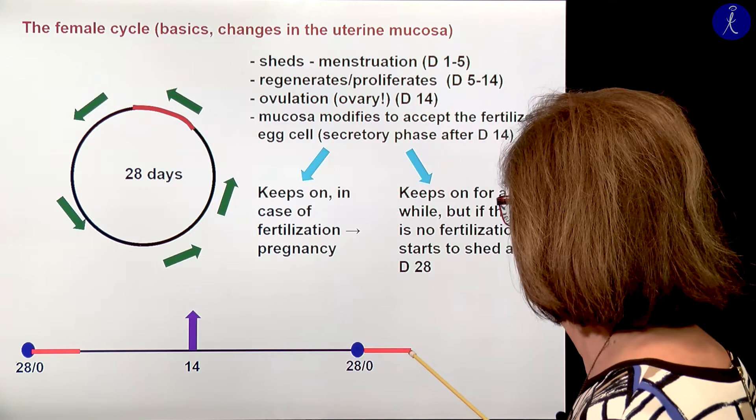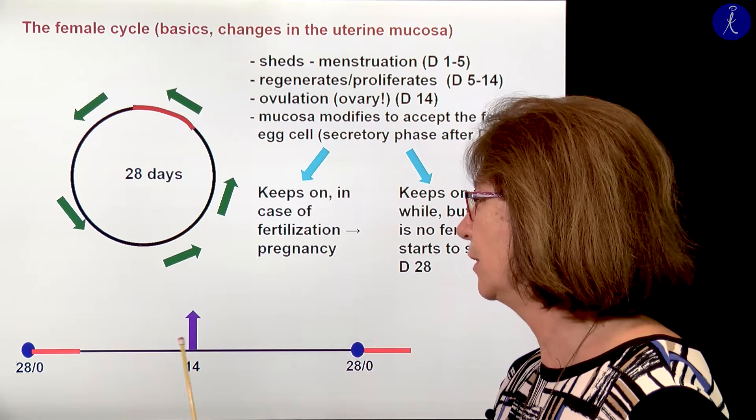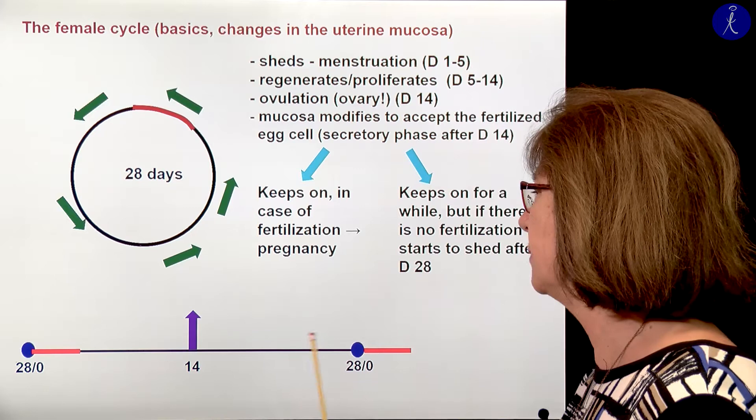So this is the cycle. The typical marking is: from day 1 to 5, that's the menstruation; from day 5 until 14, that's the proliferation of the uterine mucosa; and thereafter comes the secretory phase until the end of the cycle.